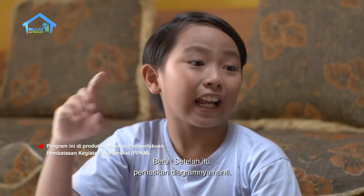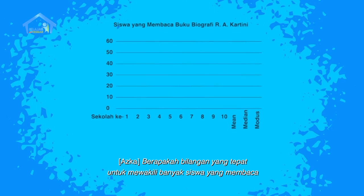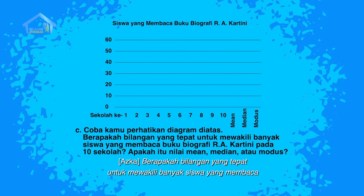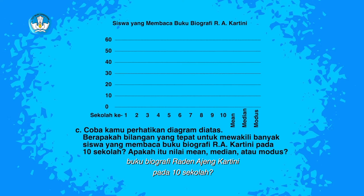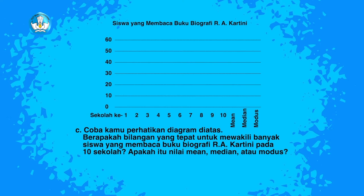Betul! Setelah itu, perhatikan diagramnya nanti. Berapakah bilangan yang tepat untuk mewakili banyak siswa yang membaca buku biografi Raden Ajeng Kartini pada 10 sekolah? Apakah itu nilai min, median, atau modus?